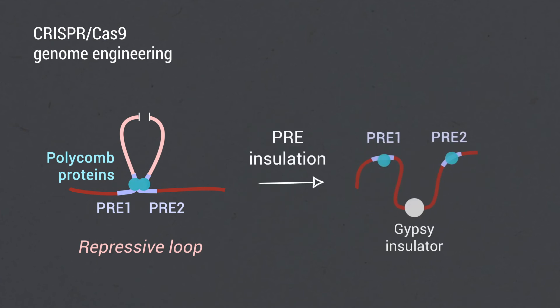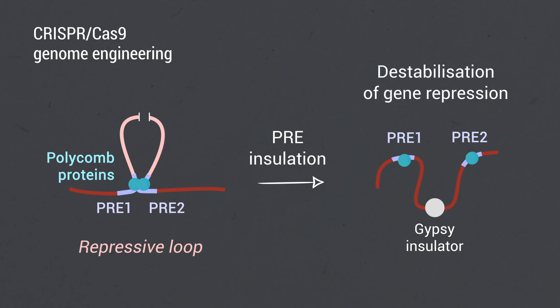Preventing loop formation without removal of polycomb components also destabilizes silencing, suggesting that chromatin architecture can play instructive roles in gene regulation during development.